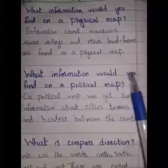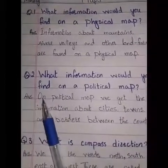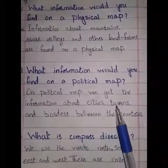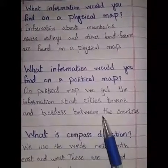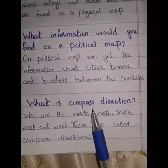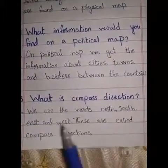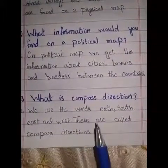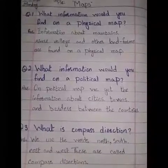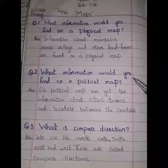Question number two — what information would you find on a political map? Answer: On a political map, we get information about cities, towns, and borders between countries. Question number three — what is compass direction? Answer: We use the words north, south, east, and west; these are called compass directions. Dear students, please learn and write your homework in your notebooks. Thank you.